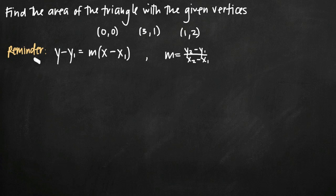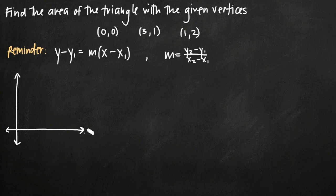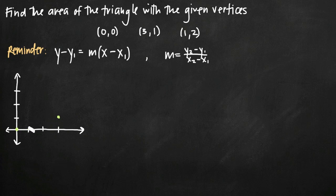This is really just an area between curves problem, so let's go ahead and draw a picture of it so that we have an idea of what we're doing before we get started. If we graph each of these coordinate points on an x-y coordinate plane, we'll get a good picture of the area problem. I'll mark off the points: (0,0) as one vertex, (3,1), and (1,2).